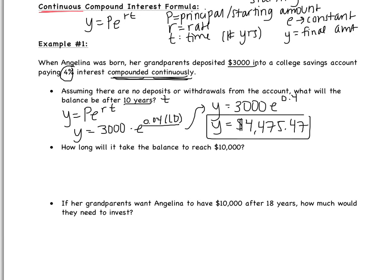So if Angelina's grandparents deposit $3,000 and she doesn't take out any money, after 10 years she's going to have $4,475 — almost $1,500 in interest. Looking at the second bullet point: how long will it take the balance to reach $10,000? 'How long' means I'm looking for T, and $10,000 is my final amount Y.